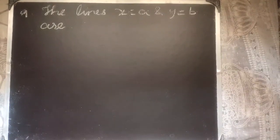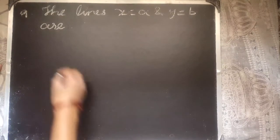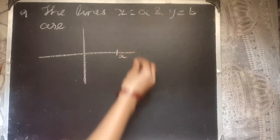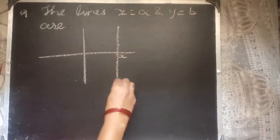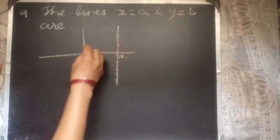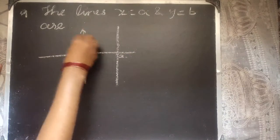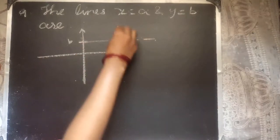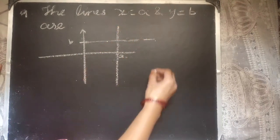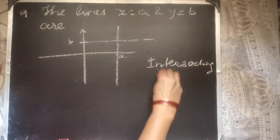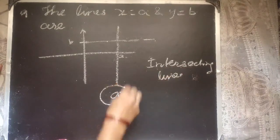The lines x = a and y = b are — with options: intersecting, parallel, overlapping, or none of these. Drawing the axes: x = a is a vertical line where x equals a at all points, and y = b is a horizontal line where y equals b at all points. These two lines cut each other, so they are intersecting lines. Option A is the correct answer.